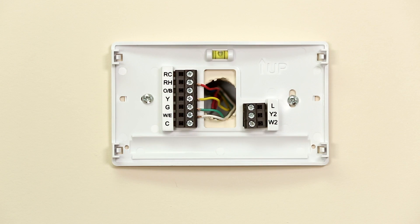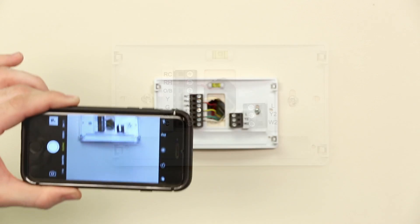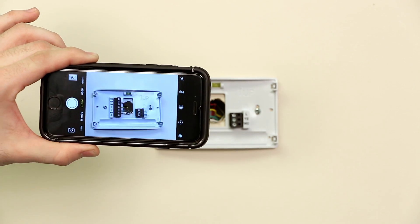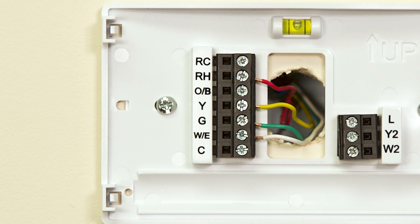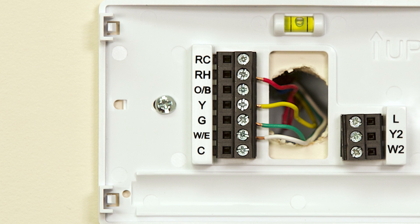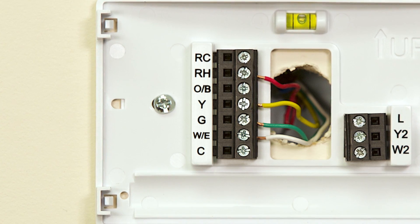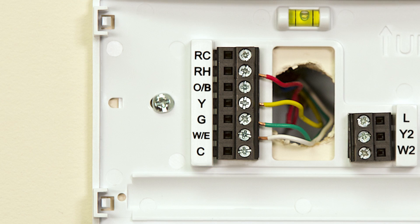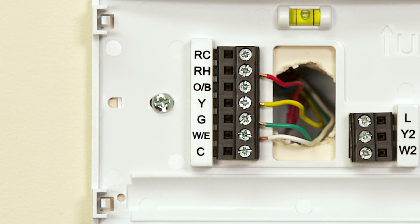Remove your current thermostat from your thermostat base plate. Be sure to take a photo of the current wire connections for reference. Also, keep in mind that the wire colors are not important. Your color scheme may be different from ours. The important part is to pay attention to which terminals each of the wires are connected to.